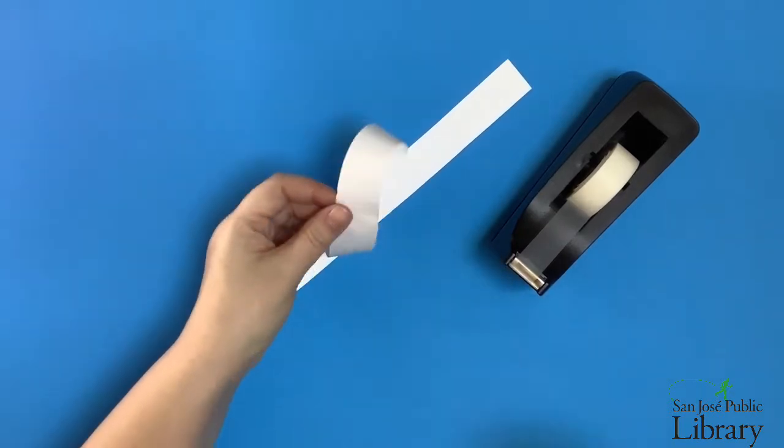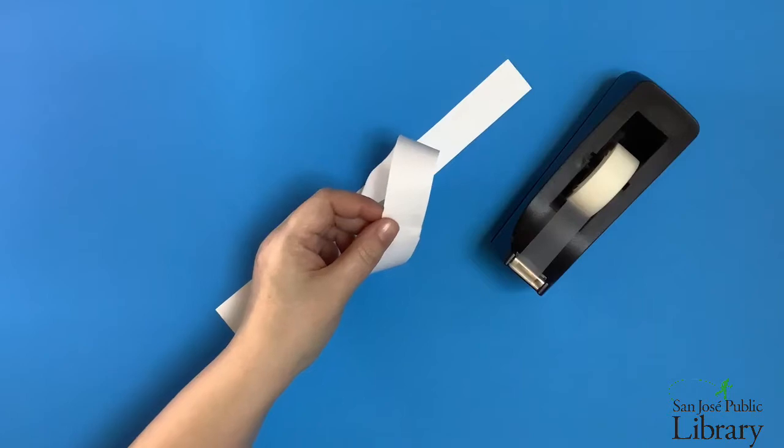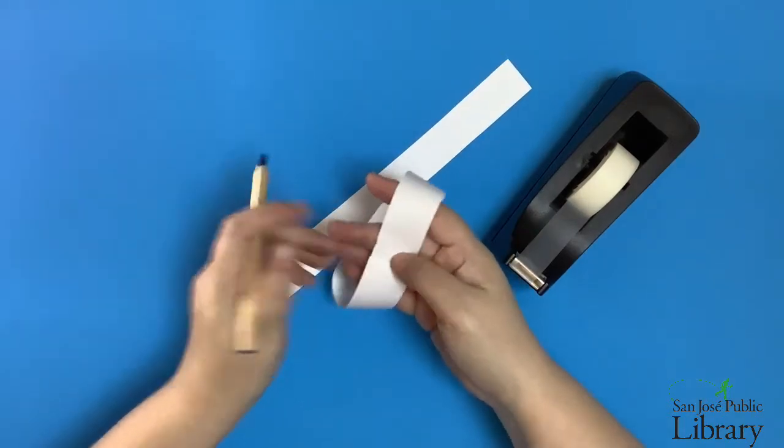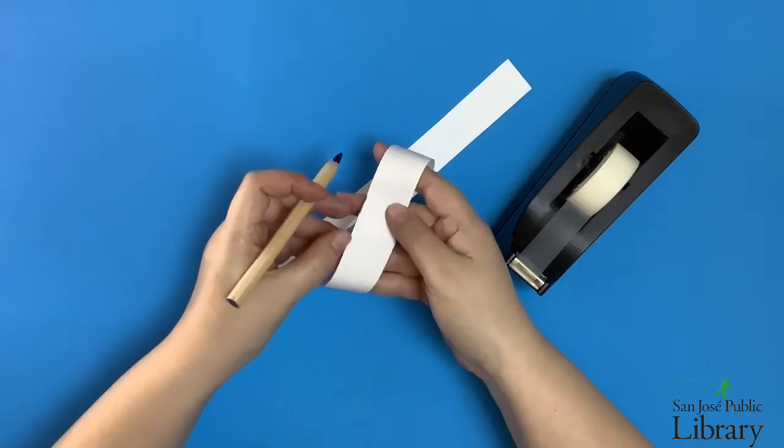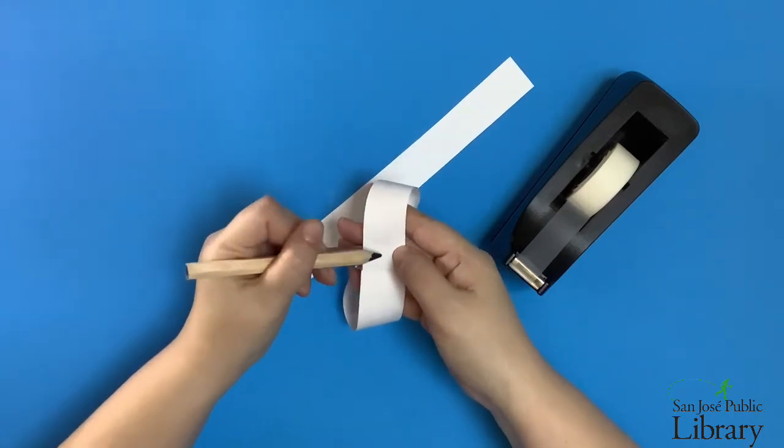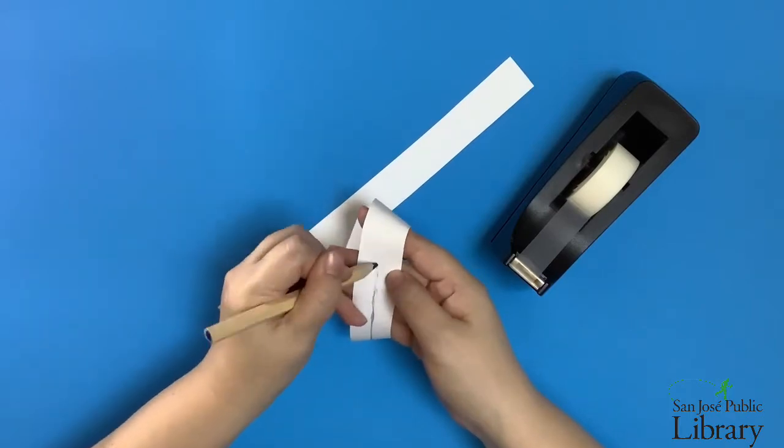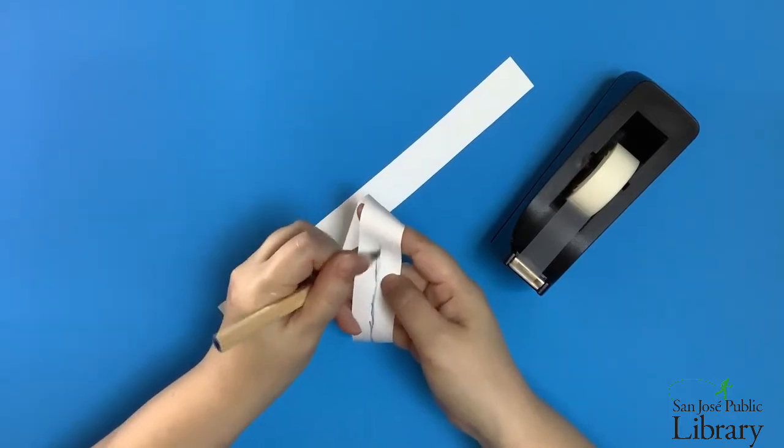And you can see this by taking a pencil and drawing a line down the center of your Mobius circle. So I'm going to do that here. I'm going to start at our join and I'm going to just draw a line down the center of the ring. Now I keep drawing and turning it in my hand and continuing the line.